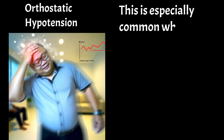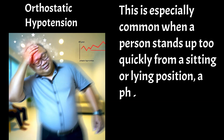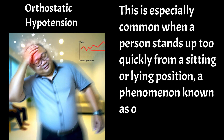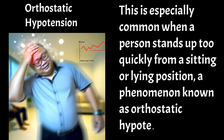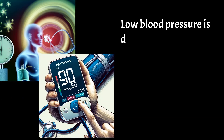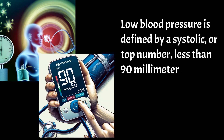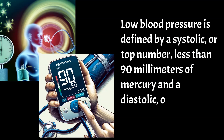Low blood pressure is defined by a systolic or top number less than 90 mmHg and a diastolic or bottom number less than 60. However, if a person is generally healthy and shows no symptoms, even lower measurements can be considered normal.